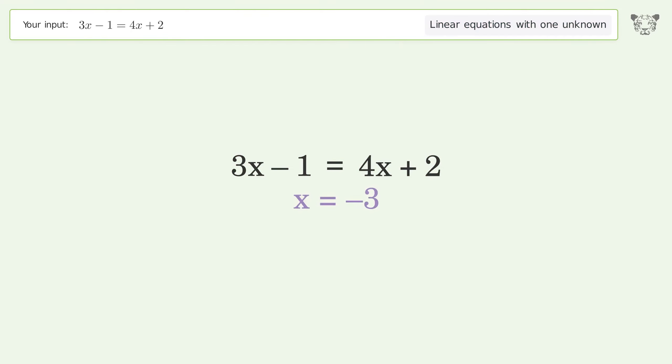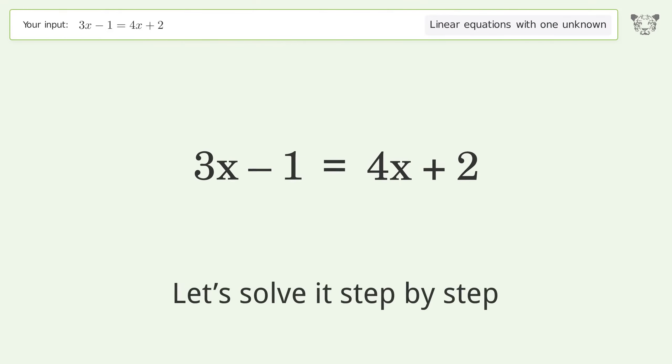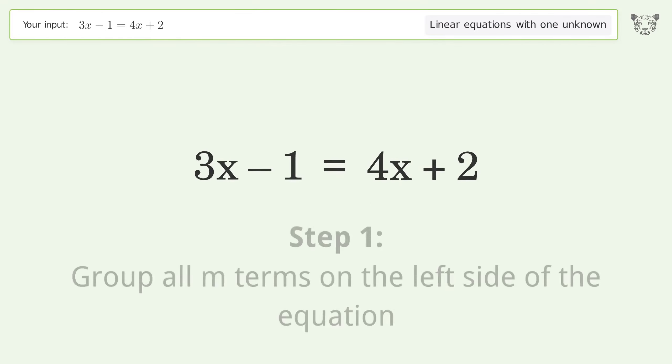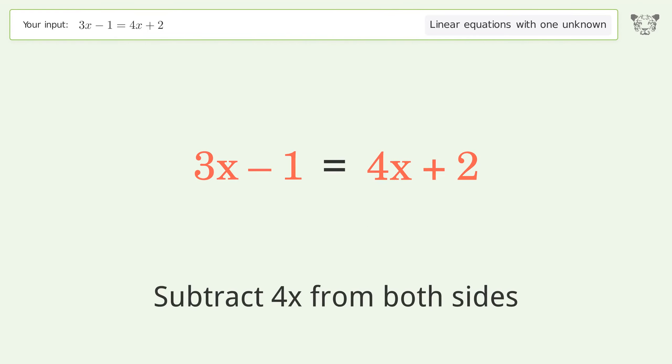You ask Tiger to solve this. This deals with linear equations with one unknown. The final result is x equals negative 3. Let's solve it step by step. Group all x terms on the left side of the equation.